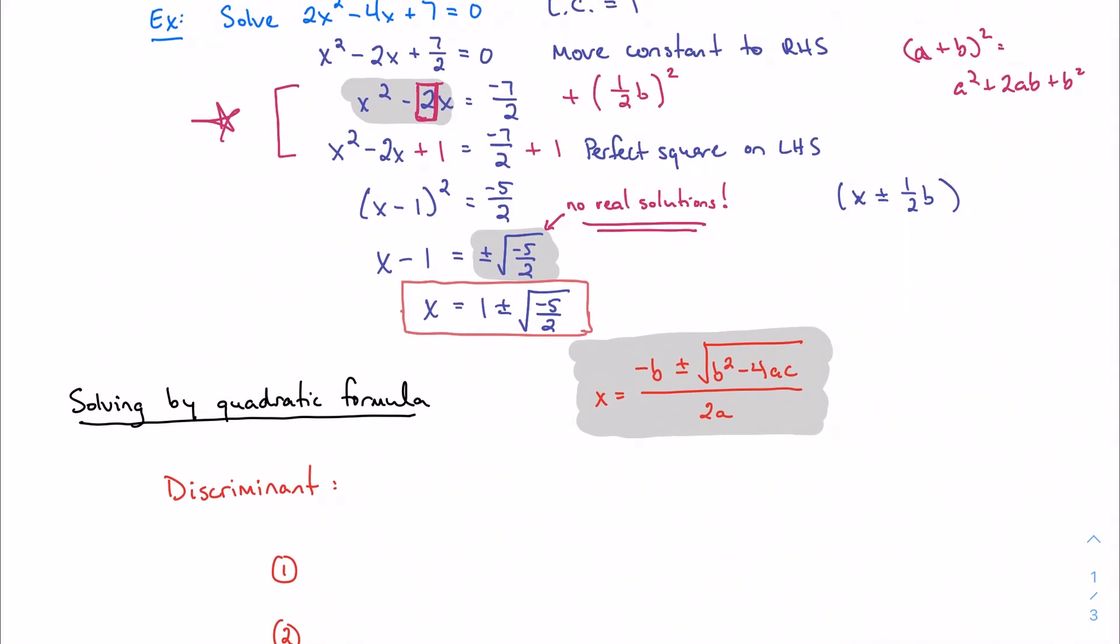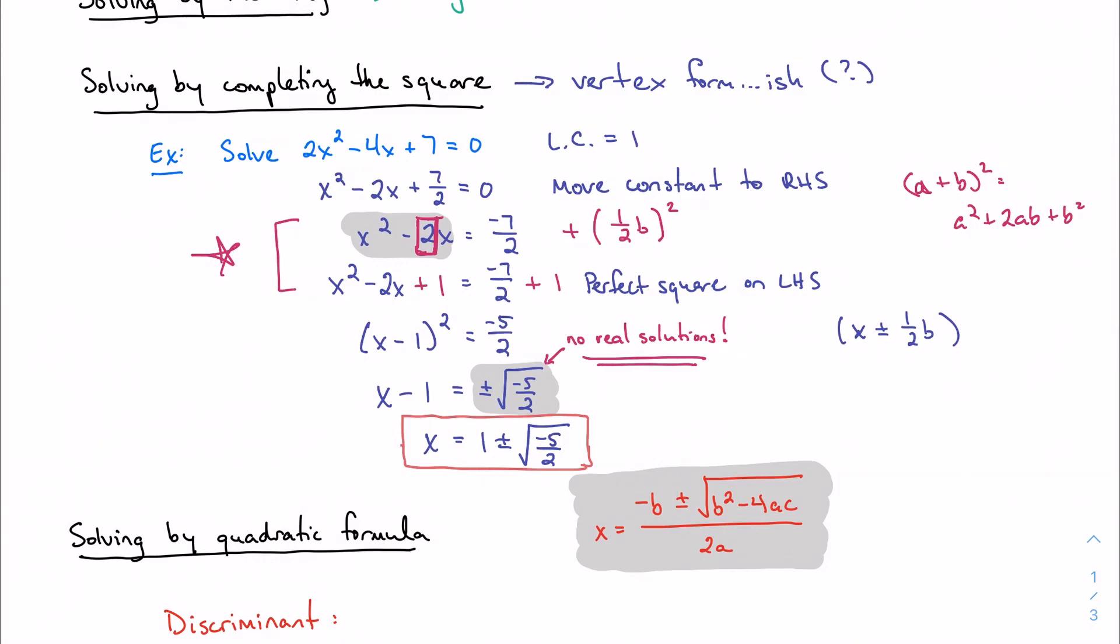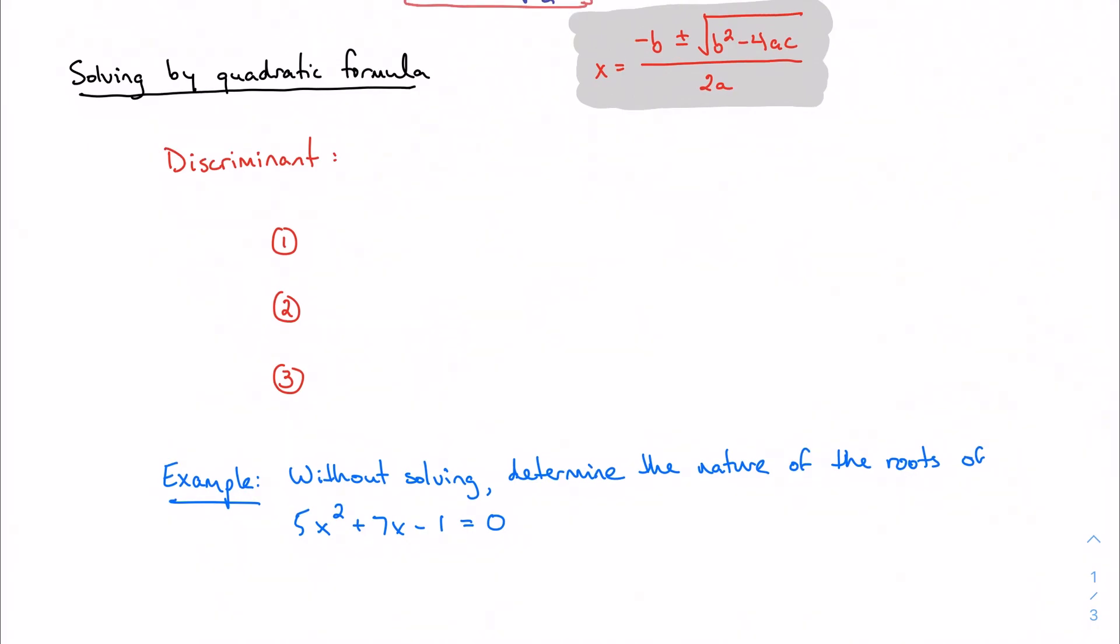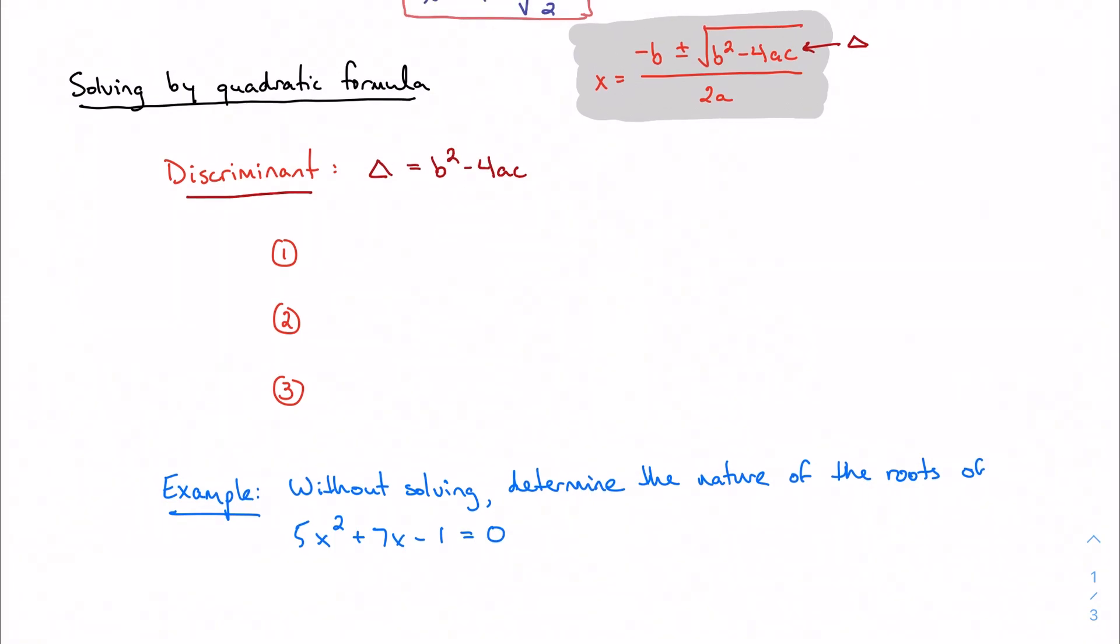Over here, I kind of said I wish I had checked this problem out to see if it had real solutions or not. And there's a way to do that without doing out the problem in full. And that's by considering what we call our discriminant. And the discriminant, our book gives the Greek letter delta, which just looks like a triangle. And the discriminant is b squared minus 4ac. It's just all the stuff that's underneath the square root in my quadratic formula. And that can be really helpful to determine what we call the nature of the roots.